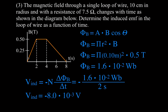From 2 to 4 seconds, the magnetic field strength isn't changing. If the magnetic field strength isn't changing, then the magnetic flux won't change either, because flux depends on the field. If there's no change in flux, there's no induced voltage. There is a field and there is a flux, but it's not changing, so from 2 to 4 seconds the induced voltage is 0 volts.